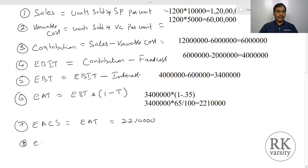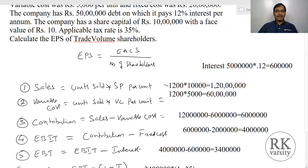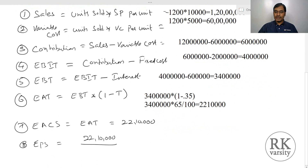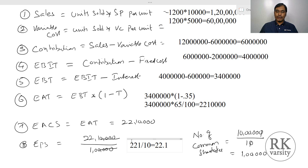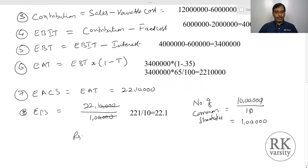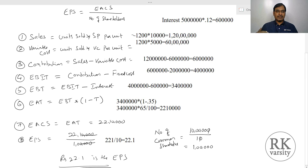The final step is to calculate Earnings Per Share. EPS equals Earnings Available to Common Stockholders, which is 22 lakhs 10,000, divided by number of common shares. The company has share capital of 10 lakhs with a face value of rupees 10, so number of shares is 10 lakhs divided by 10, which is 1 lakh. Therefore, EPS is 22,10,000 divided by 1,00,000, giving rupees 22.1 as the EPS.